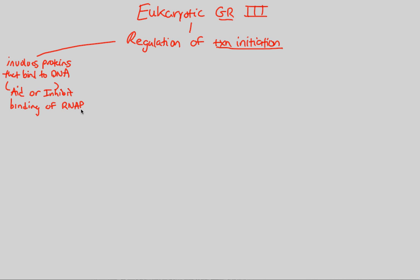RNA polymerase in this flowchart will be abbreviated as RNAP. We have to understand initiation — initiation is all about getting transcription started. Transcription is going from DNA and turning that into an mRNA in eukaryotes. Transcription has three steps, and we're focusing on step one, which is initiation. It makes sense that initiation involves proteins that are either going to aid — increase transcription — or inhibit transcription through their binding on RNA polymerase.